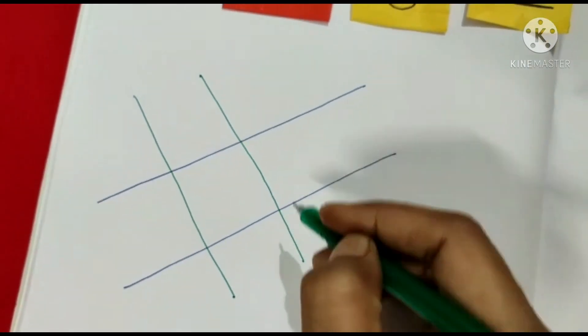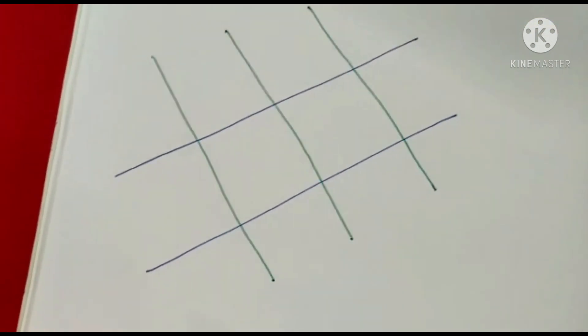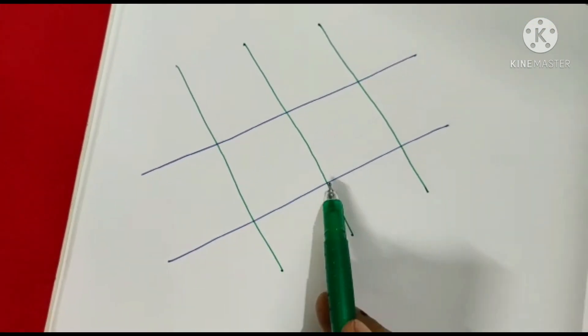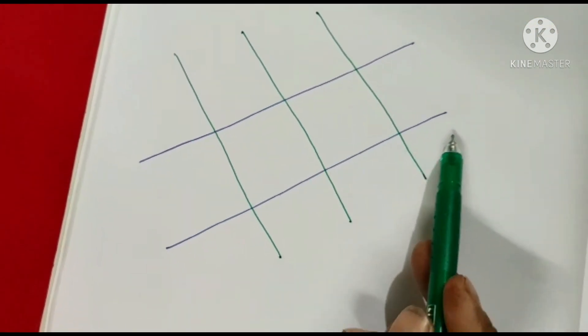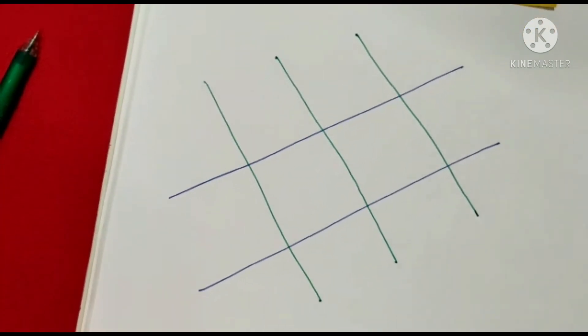Yes 1, 2 and 3. Like this we will draw. Now the point we have to count where these 2 lines are crossing each other. So let us count.